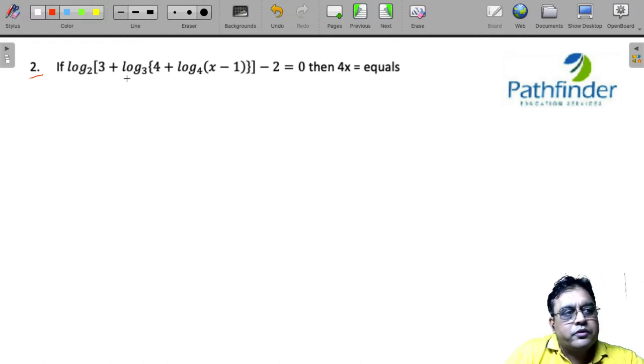If log base 2 of 3 plus log base 3 of (4 + log base 4 of (x - 1)) minus 2 equals 0, then you have to calculate the value of x.